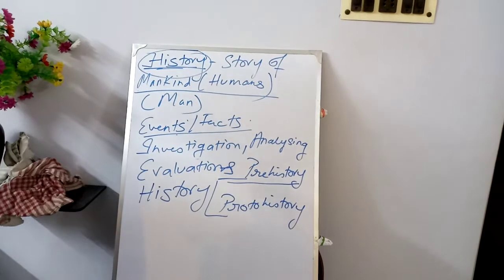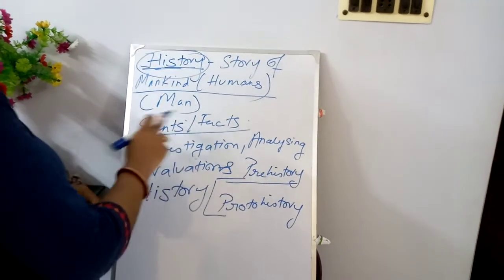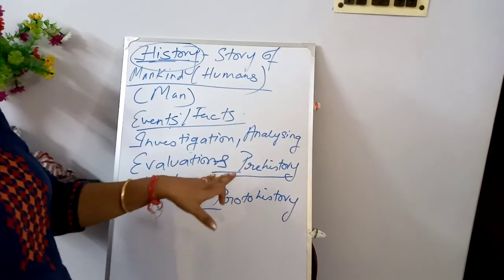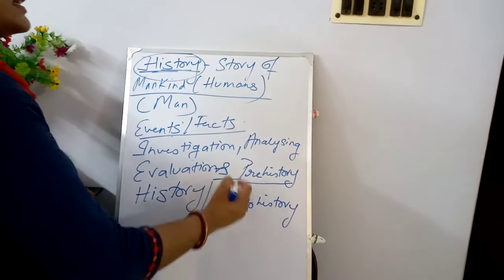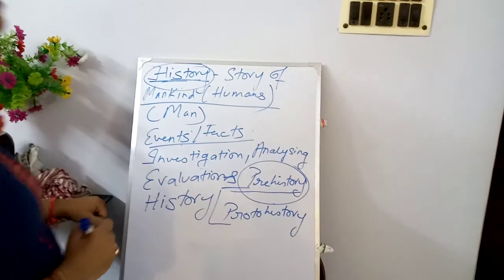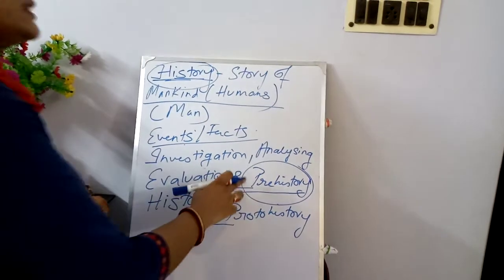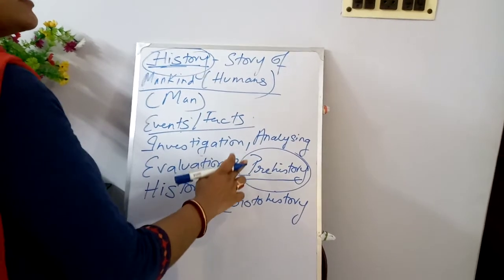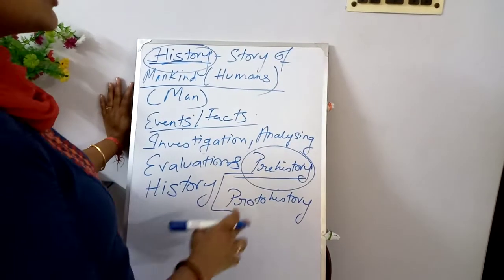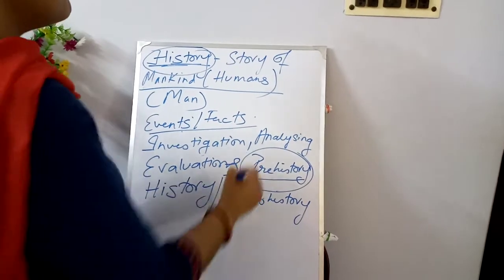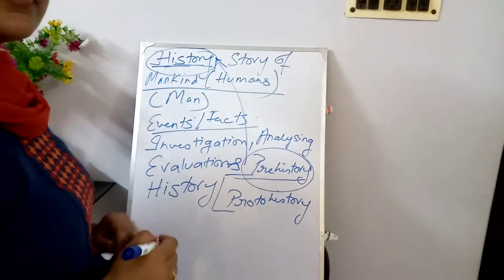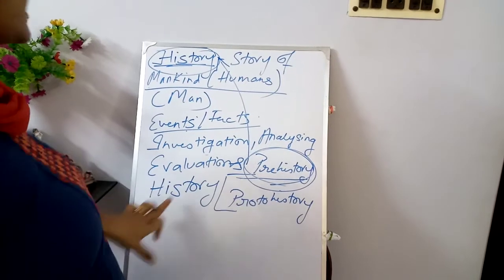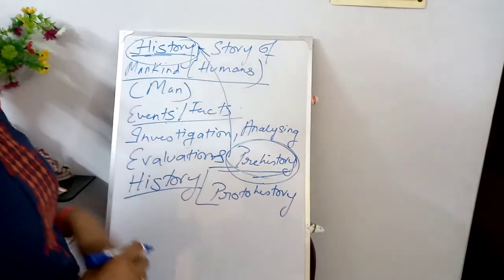What is prehistory? Prehistory refers to events or things that are not being recorded, and that is why it is not within the sphere of history. In this period, nothing was recorded. No written materials or any particular evidence are found that could flow into the source of history. So it is called prehistory — the period that existed even before history came into being.